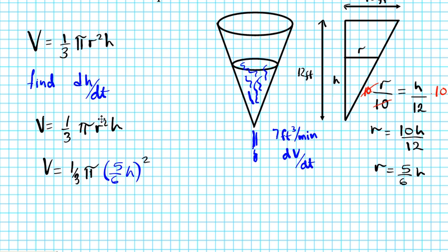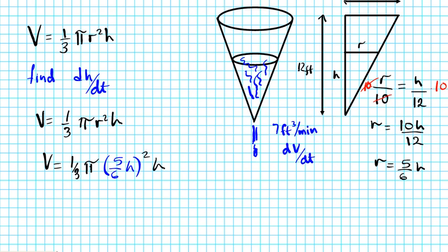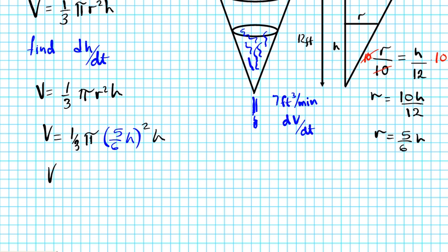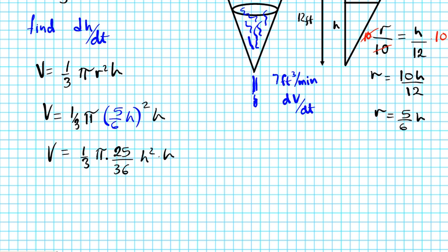Put a square there because r is squared times h. Let's simplify this formula. So we're going to have V equals one third pi, and then distribute the square to everything, to the 5 we'll have 25, to the 6 we'll have 36, to the h we'll have h squared, times h. So simplify it a little bit further, we have the volume V equals, we'll multiply the numbers, we'll have 25 over 108 pi, and then h squared times h is h to the 3rd.